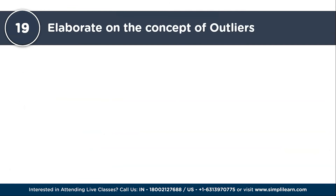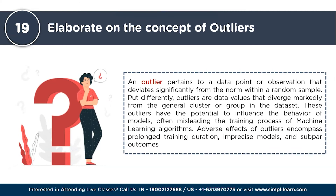The next question: elaborate on the concept of outliers. An outlier pertains to a data point or observation that deviates significantly from the norm within a random sample — in other words, data values that diverge markedly from the general cluster in the dataset. These outliers have the potential to influence the behavior of models, often misleading the training process of machine learning algorithms. Adverse effects include prolonged training duration, imprecise models, and subpar outcomes. However, outliers may harbor valuable insights on occasion, underscoring the importance of meticulous investigation and appropriate treatment of outliers.